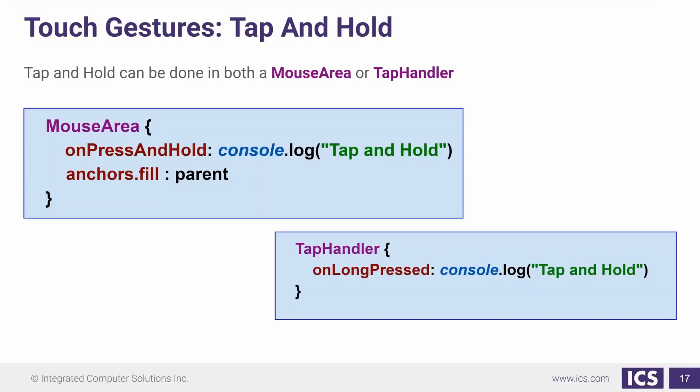Now, one of the simplest gestures that we're able to do is the tap and hold. Tap and hold is usually used to display a context menu. For this we can use a MouseArea or a TapHandler and we can make use of the onPressAndHold and the onLongPressed depending on which one you use to open it, and then we can use onRelease to close the context menu.